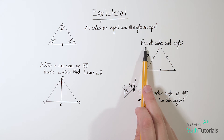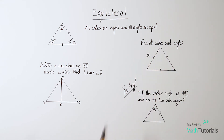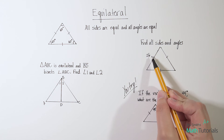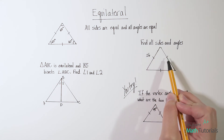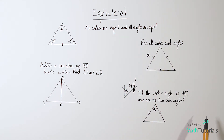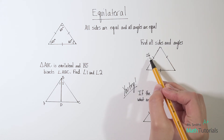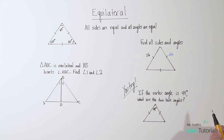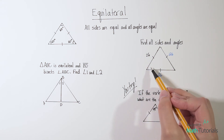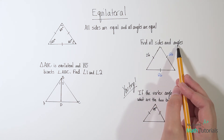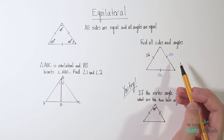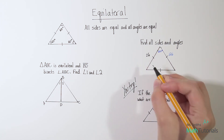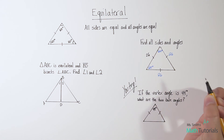So let's do some examples. The first one says find all sides and angles. If I know this is an equilateral triangle, as shown by the three tick marks, and this side is 26, I can automatically say this side is 26 and this side is 26. And because it's equilateral, this angle is 60 degrees, this angle is 60 degrees, and this angle is 60 degrees.